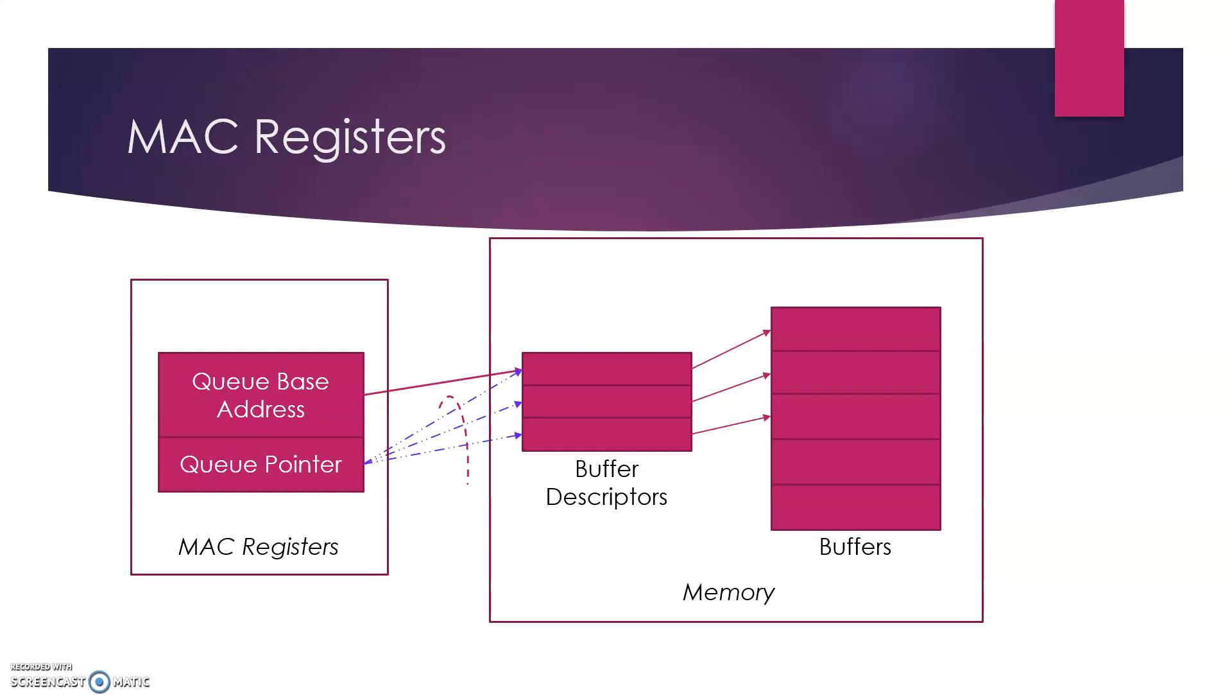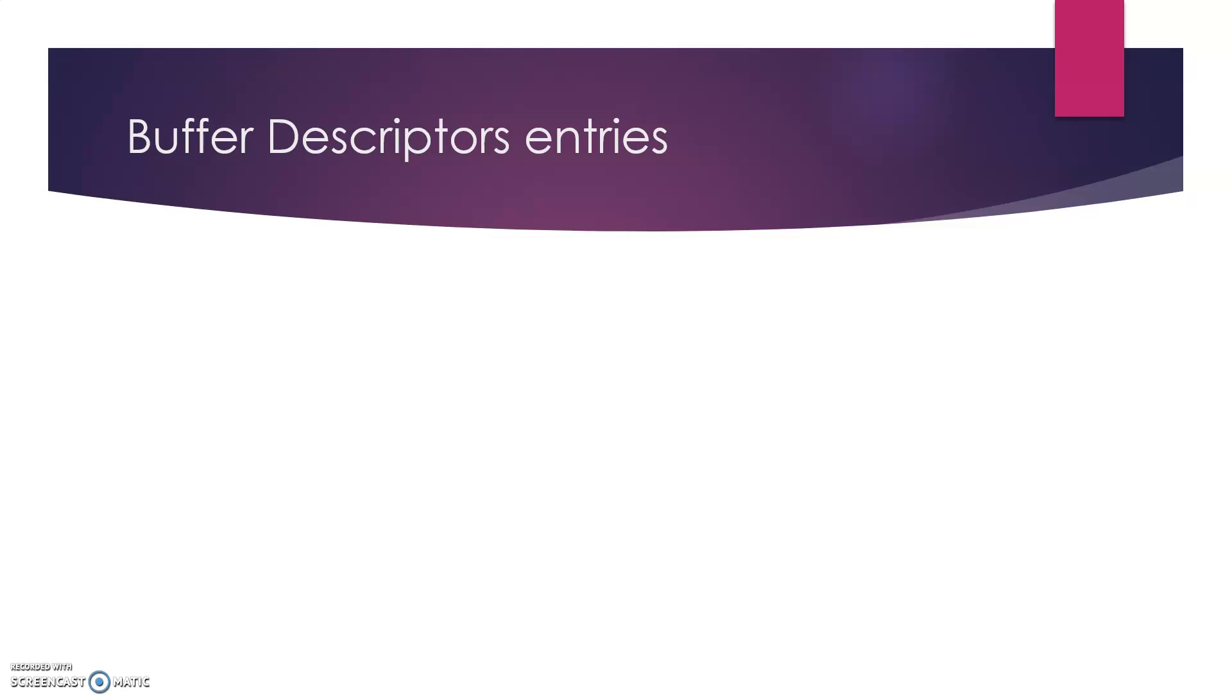Each buffer descriptor is composed of two 32-bit words. One for buffer address and other for configuration and status. And that brings us to the buffer descriptor entries.